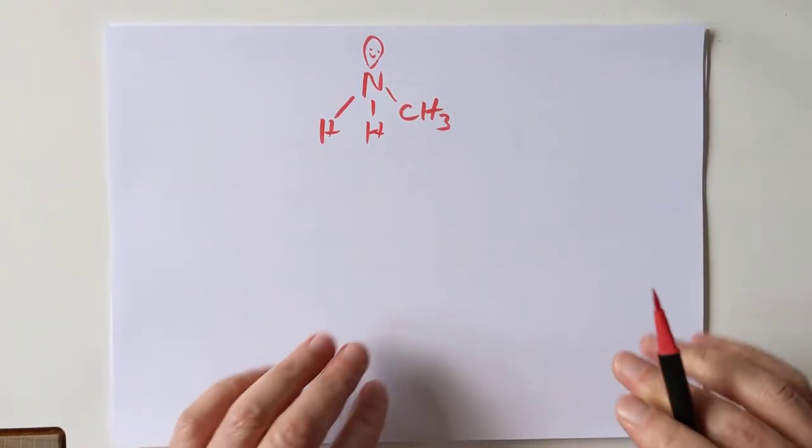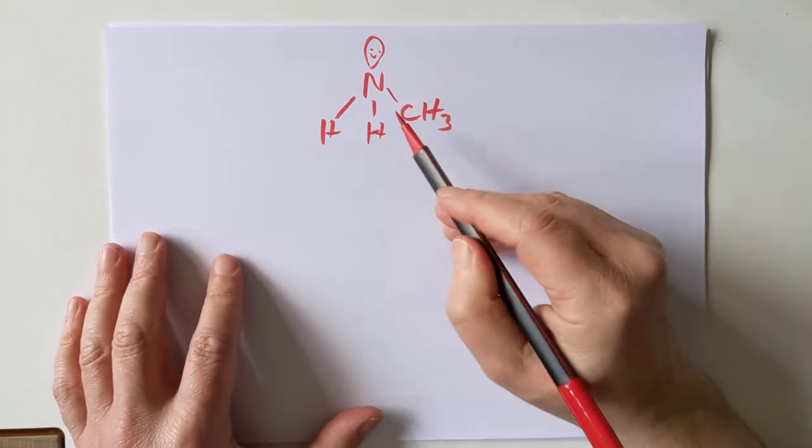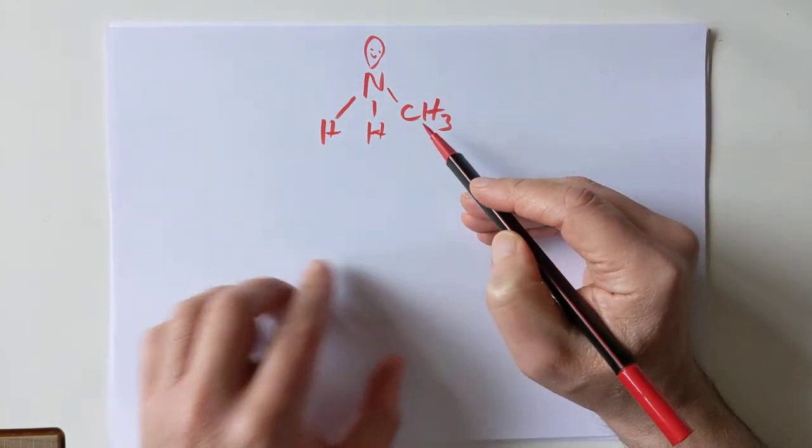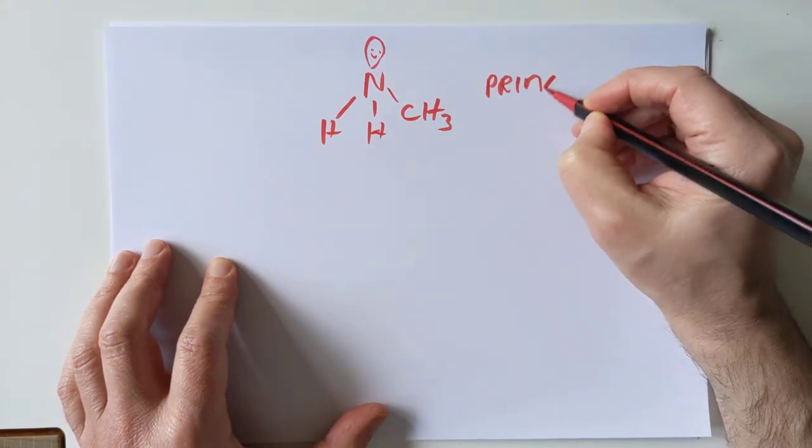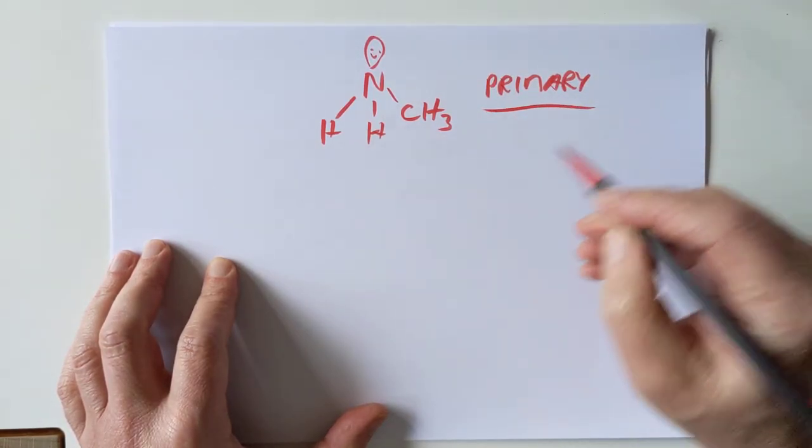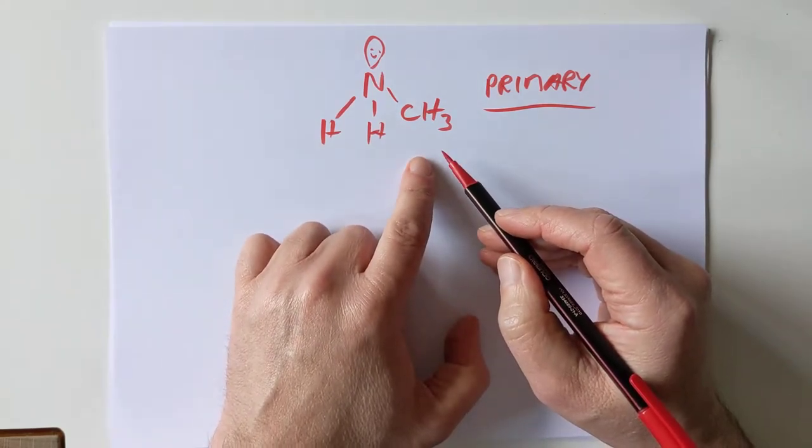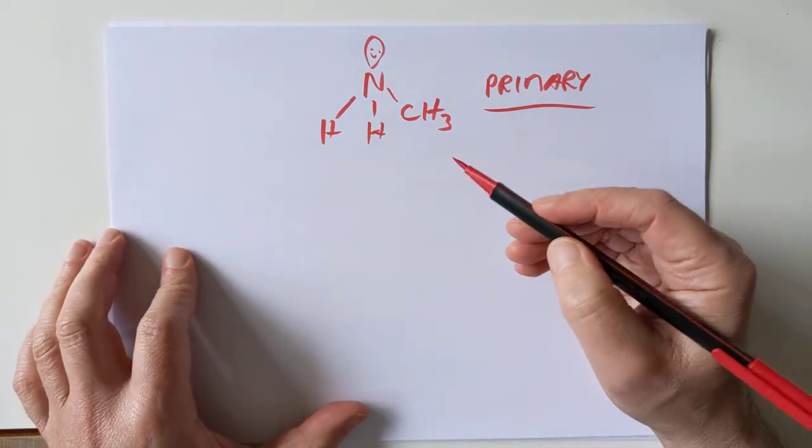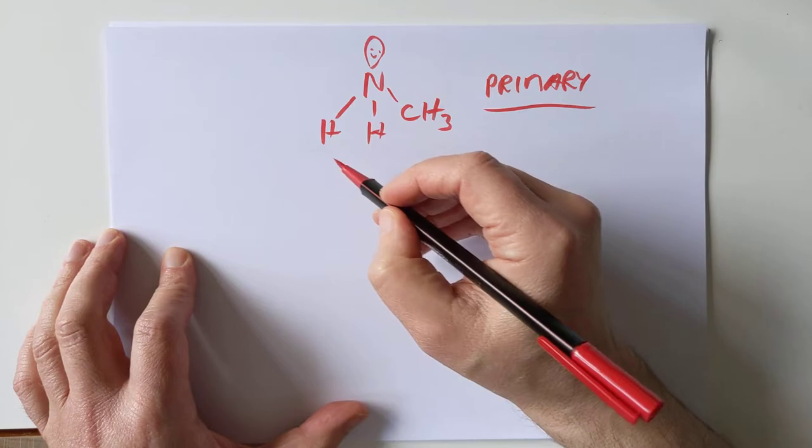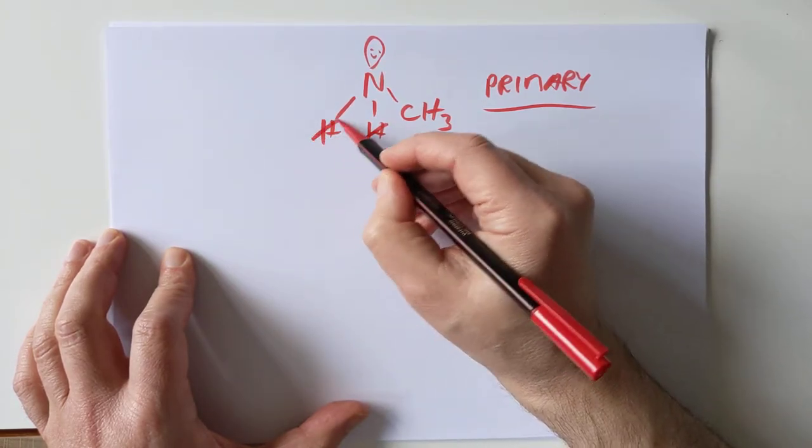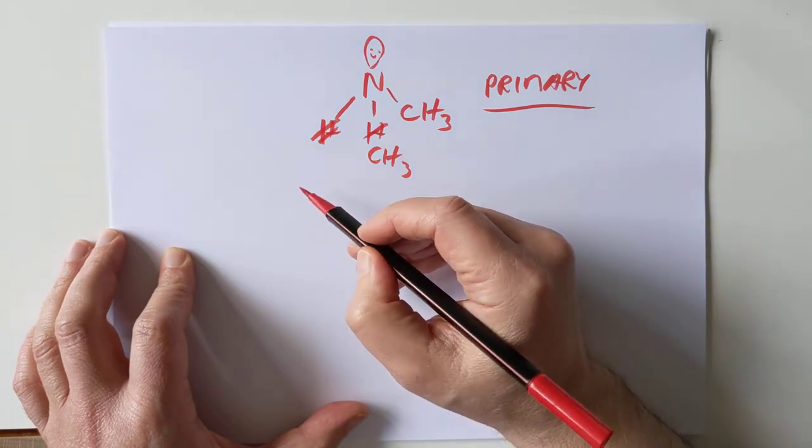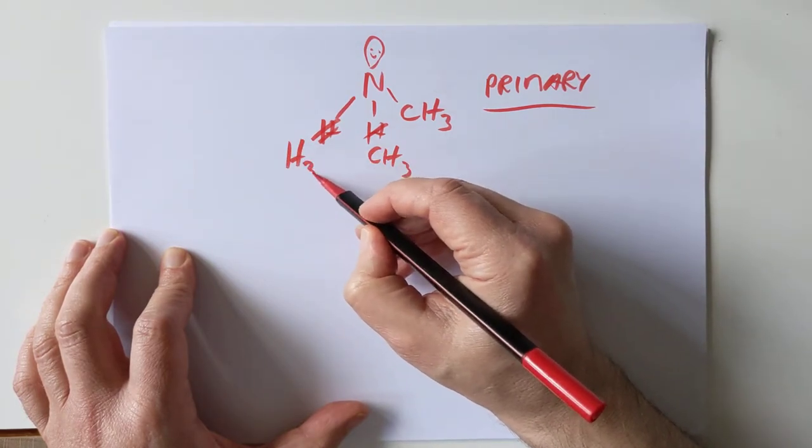I think what we'll do is first we'll look at their classification. Now what I've done here is I've only replaced one of the hydrogens, which makes this a primary amine. You can probably work out in your head what a secondary and tertiary amine is. It's not going to strain your brain too much. Secondary amine, of course, would involve replacing this with a CH3 and a tertiary amine would involve replacing all three of the hydrogens with a CH3.